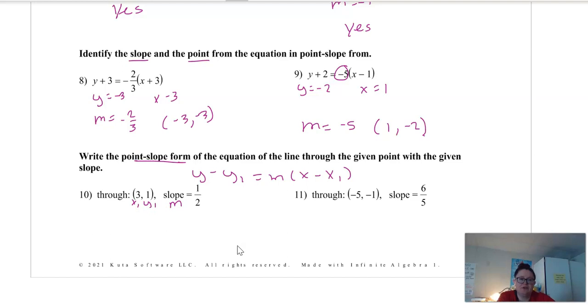So now we're just going to come down here, and we're going to put it in. We've got y subtract 1 equals 1 half from our slope times x subtract 3. And that's all there is to it. I'm done. I've written the equation in point-slope form. I didn't have to actually do any math.